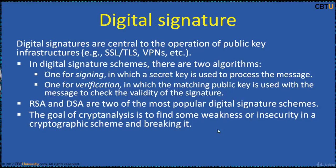In digital signature schemes, there are two algorithms: one for signing, in which the secret key is used to process the message or a hash of the message or both; and one for verification, in which the matching public key is used with the message to check the validity of the signature. RSA and DSA are the two most popular digital signature schemes. DSA doesn't encrypt and can only be used for signing and verification.